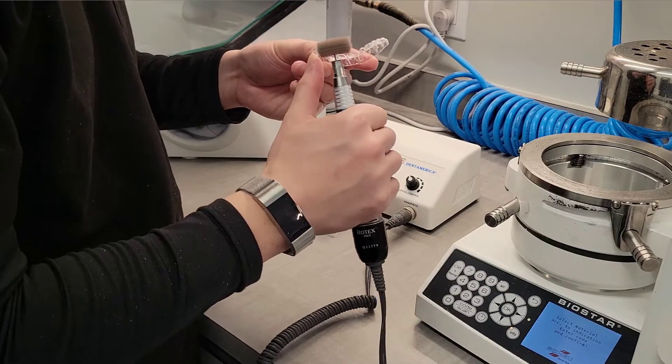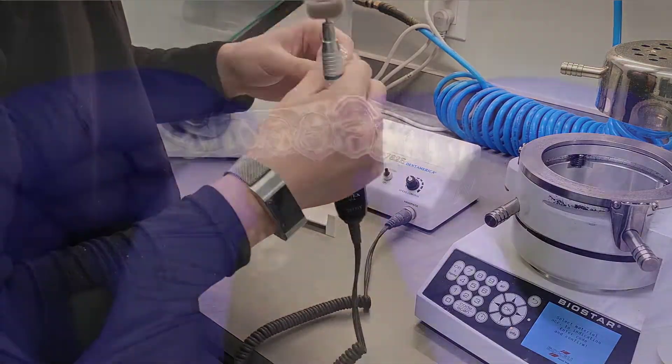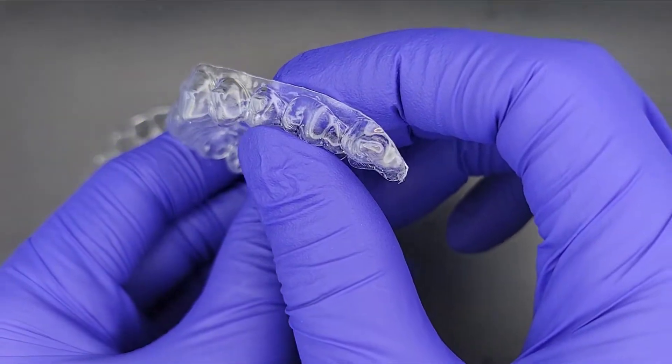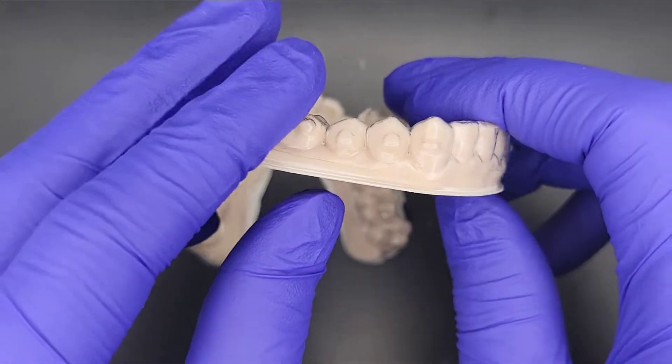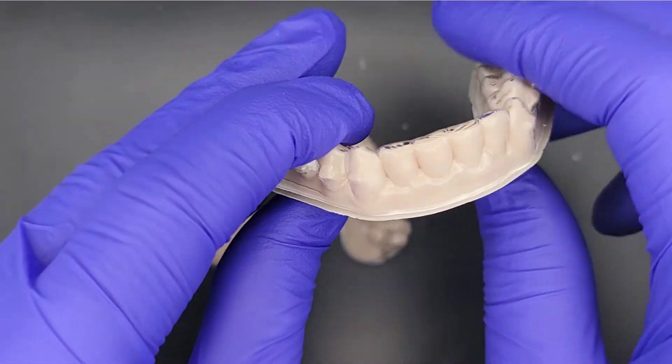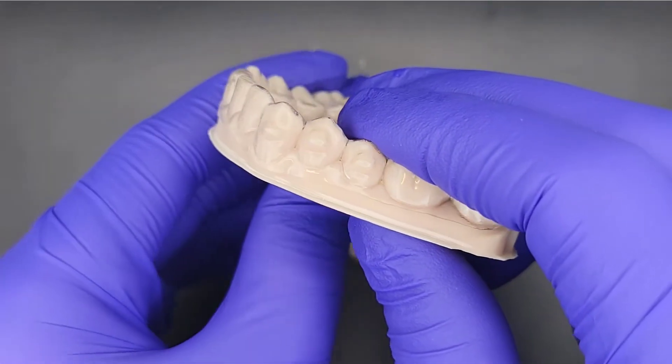Once the aligner has been roughly cut, it is ready for fine trimming. This step is extremely important since the trim line impacts patient comfort as well as the efficiency of moving teeth with the aligner. Incorrect trimming can create extra work for the practice through extra visits and interruption with the aligner wear cycle.